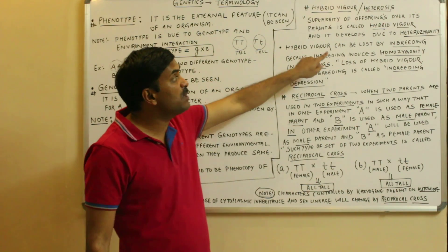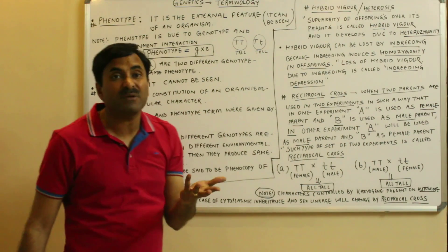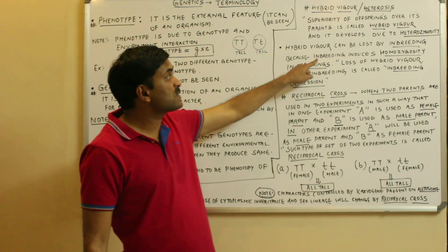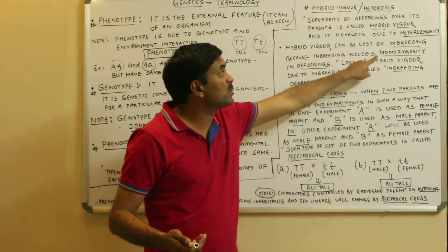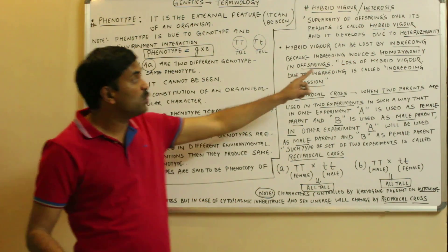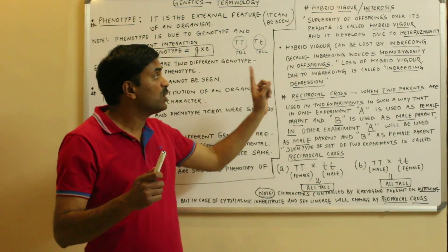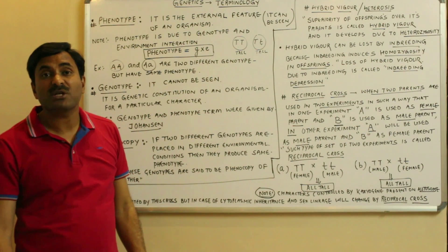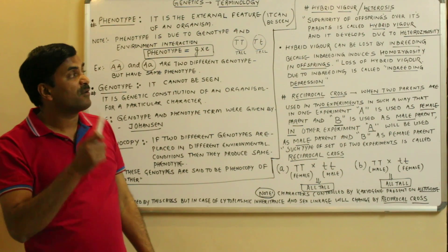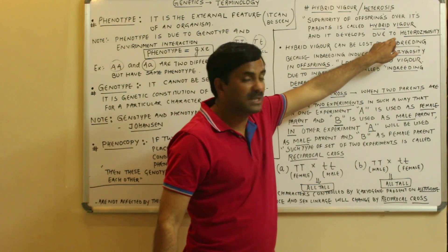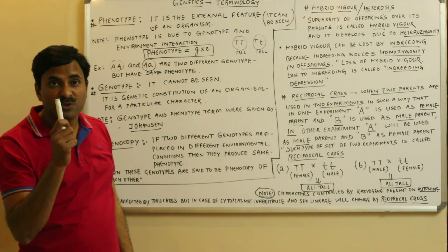Hybrid vigor can be lost by regular inbreeding or selfing between organisms, because inbreeding or selfing never causes heterozygosity — it causes homozygosity. Loss of hybrid vigor due to inbreeding is called inbreeding depression. To remove inbreeding depression, we have to go through heterozygosity. This is hybrid vigor or heterosis, and it is generally applied in breeding experiments.